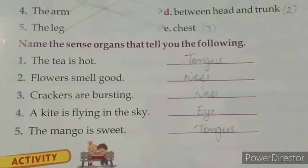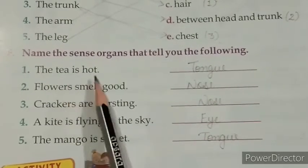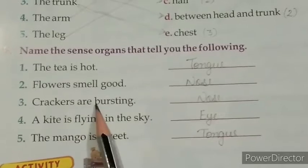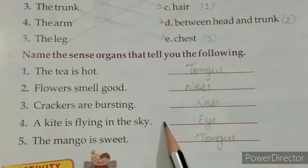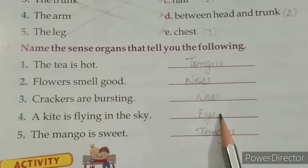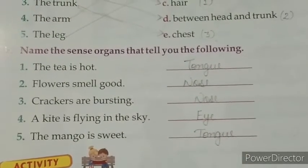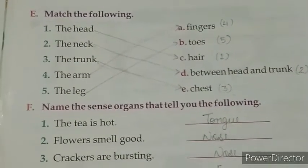Understood, all of you? Again look here: the tea is hot — tongue; flowers smell good — nose; crackers are bursting — nose; a kite is flying in the sky — eye; the mango is sweet — tongue. Do this work in your EBS book very carefully, in good handwriting, and with correct spellings.